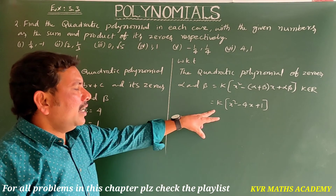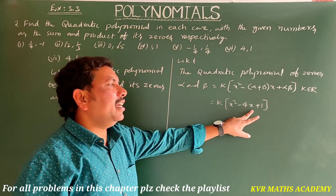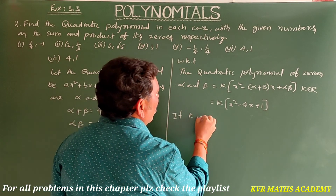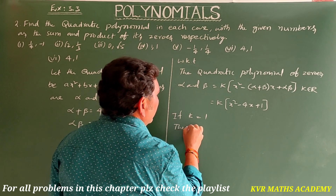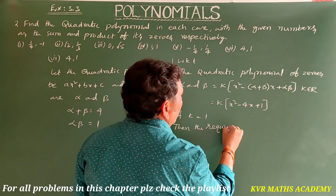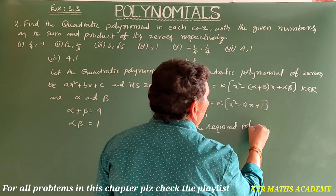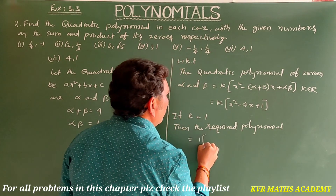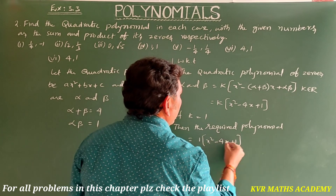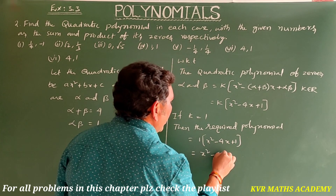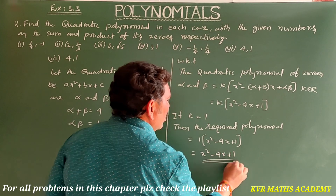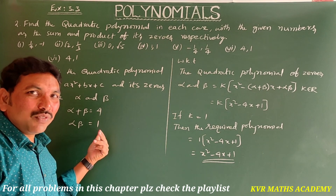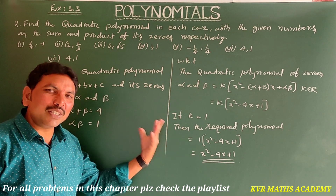There is no denominator, so take k=1. The required quadratic polynomial is x² - 4x + 1. This is the required polynomial with sum of zeros = 4 and product of zeros = 1.